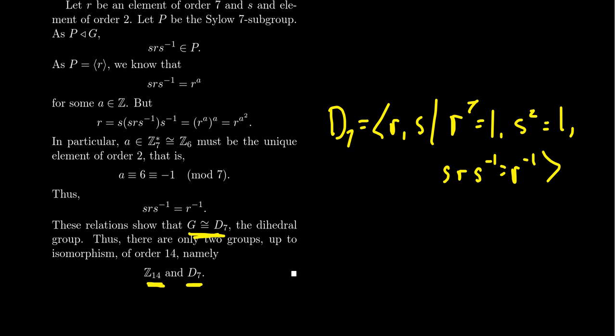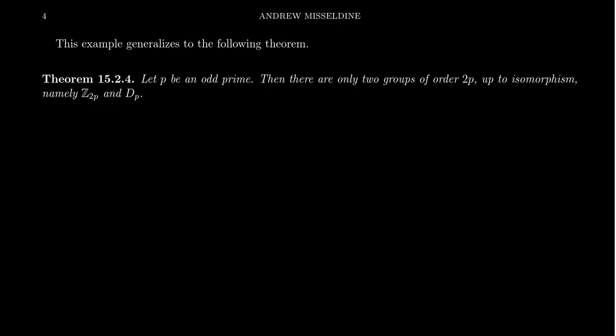This example generalizes to the following theorem: let P be an odd prime, then there are only two groups of order 2P up to isomorphism — the cyclic group and the dihedral group — because the exact same argument applies. 2P is a semi-prime, so there's automatically a unique Sylow P subgroup that's normal. The second case doesn't apply because P is congruent to 1 mod 2 since P is odd. If you have a unique Sylow 2 subgroup you get Z₂P; if you have P many Sylow 2 subgroups, that leads to the dihedral group.